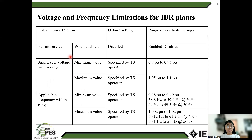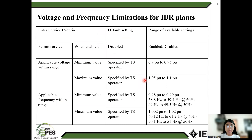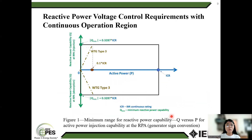Voltage and frequency limitation for IBR plants: when entering service, the IBR plant shall deliver power to the transmission system. The applicable voltage and frequency shall be within the range specified. Applicable voltage within range: minimum value 0.9 to 0.95 per unit, maximum value 1.05 to 1.1 per unit. Applicable frequency within range: minimum value 0.98 to 0.99 per unit, maximum value 1.002 to 1.02 per unit.